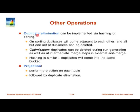Let us wrap up the other operations. All of them are done very efficiently using sorting and hashing. The first is duplicate elimination. If you sort on all attributes, two identical tuples will be adjacent in the sorted order. Once sorted, scan through: when you see a new tuple, check if it equals the previous one. If it is new, output it; if it is the same, skip it.